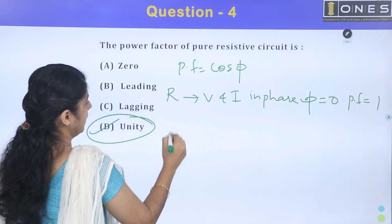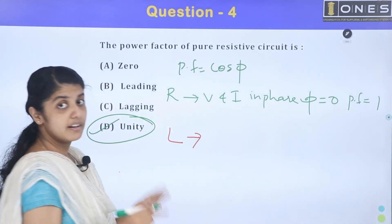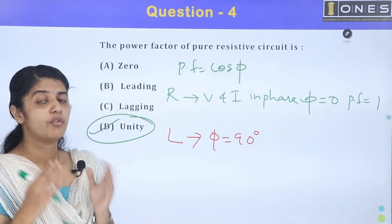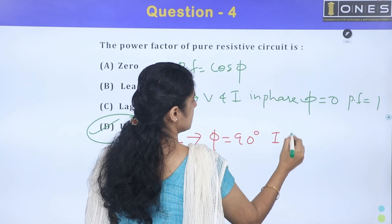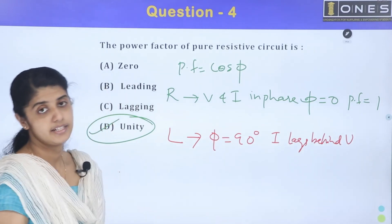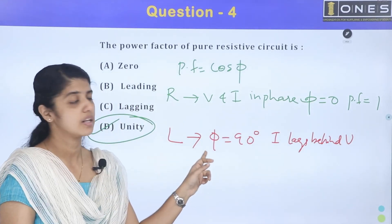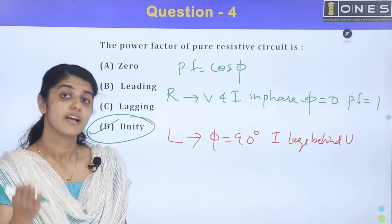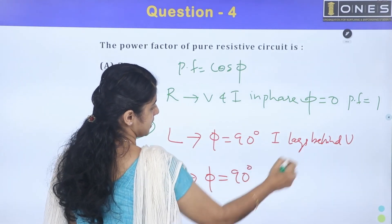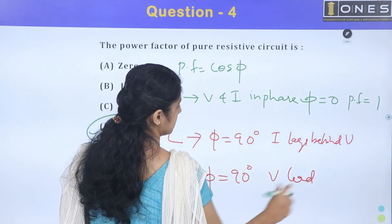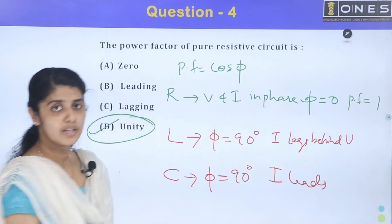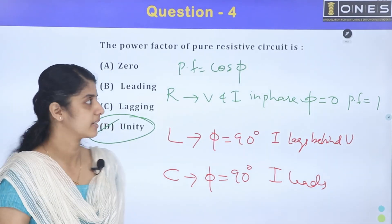In an inductive circuit, φ equals 90 degrees — voltage is leading, current lags behind voltage by 90 degrees, giving a lagging power factor. In a capacitive circuit, it is the opposite: φ equals 90 degrees with a leading power factor.